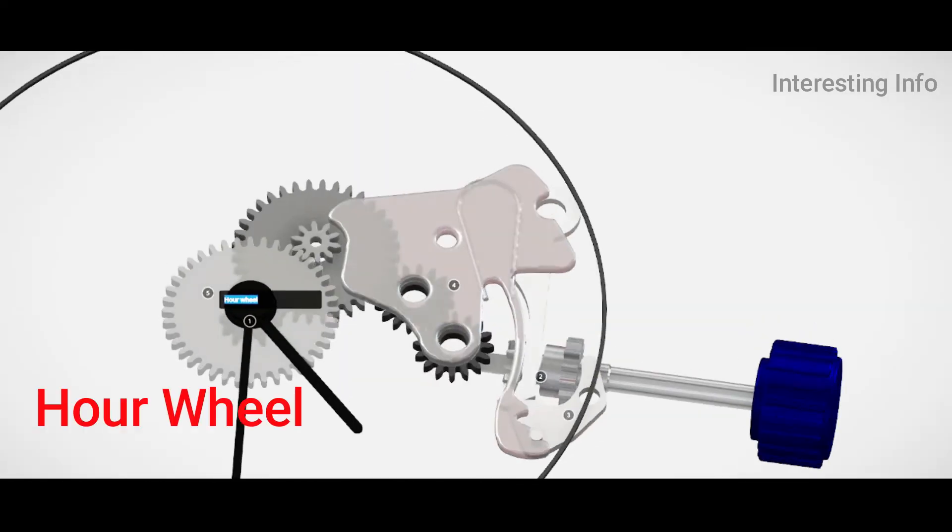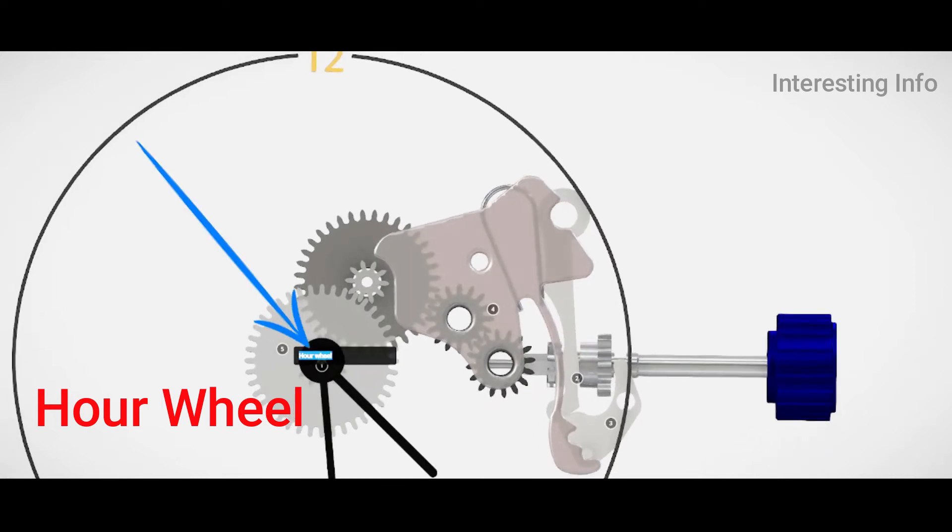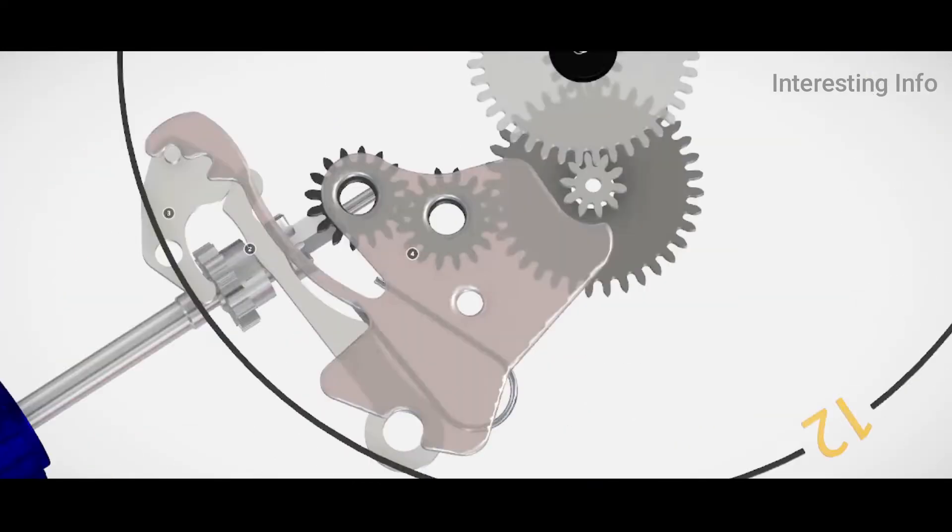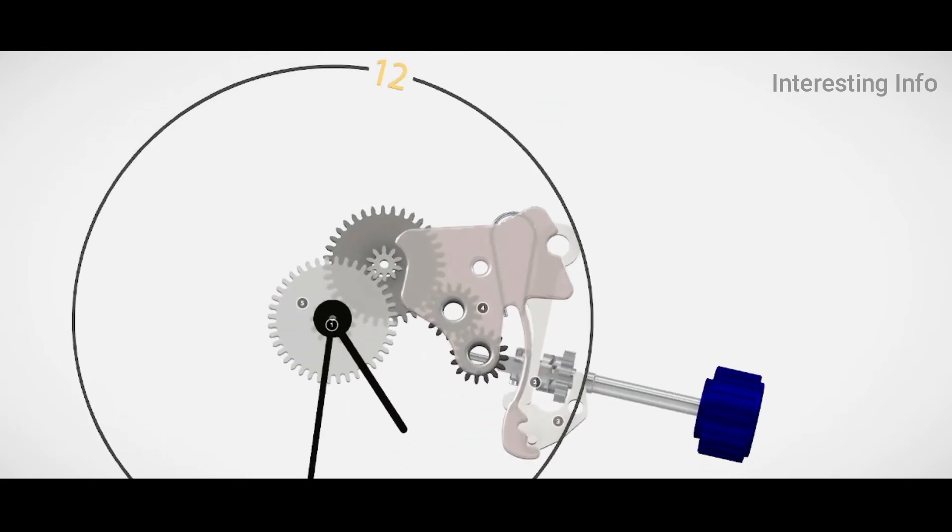Number 5: Our Wheel. In horology, a wheel train is the gear train of a mechanical watch or clock. Although the term is used for other types of gear trains, the long history of mechanical timepieces has created a traditional terminology for their gear trains which is not used in other applications of gears.